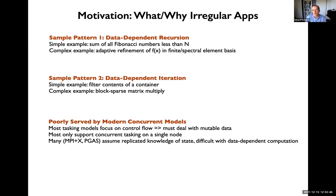One example is adaptive refinement or reconstruction of functions in a spectral element basis; another is data-dependent iteration in sparse matrix multiply — both will appear later. Unfortunately, constructing irregular applications, and really even regular applications using task-based decomposition, is difficult. Most tasking models focus primarily on control flow; some are data-centric but assume everyone wants to deal with mutable data. Most only support concurrent tasking on a single node — think OpenMP, CUDA — and the distributed memory ones assume replicated knowledge of state, which is difficult with data-dependent computation since you're discovering that knowledge as you compute.